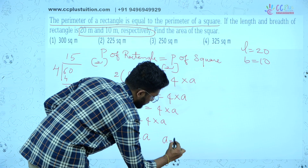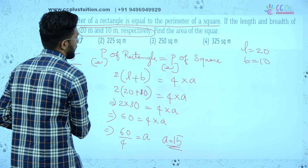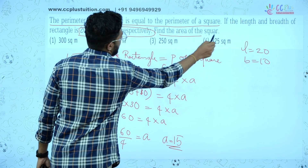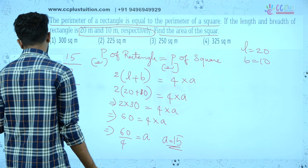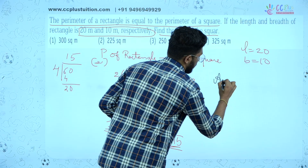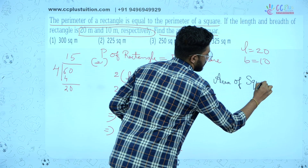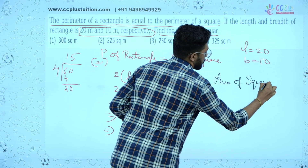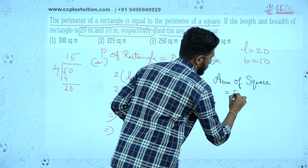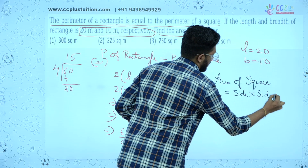A becomes equal to 15. So the side A is 15. Now how to find the area of the square? Area of square is the formula: side into side.